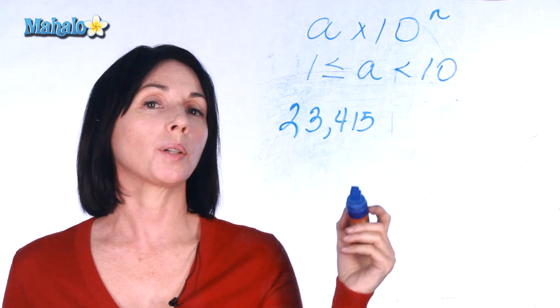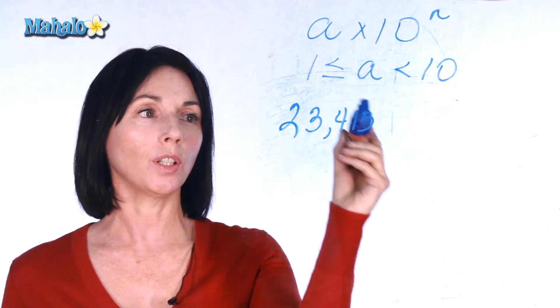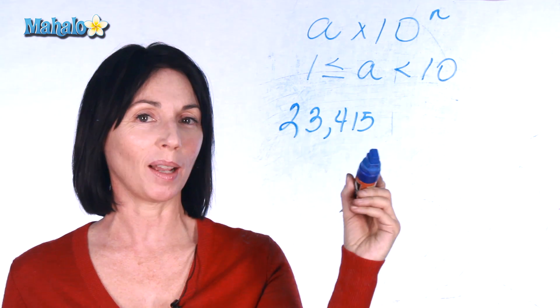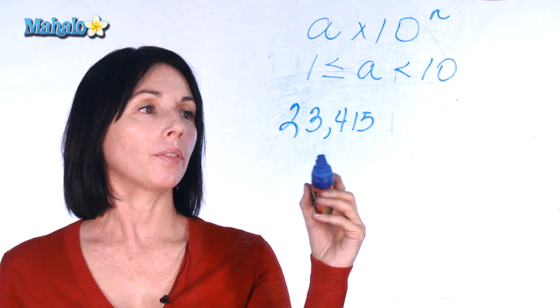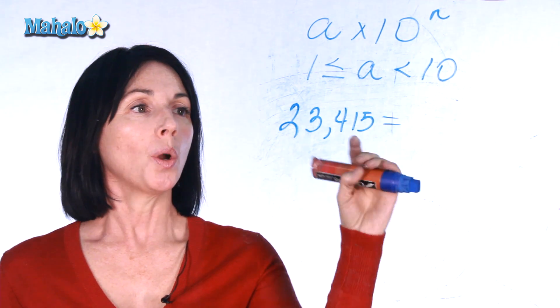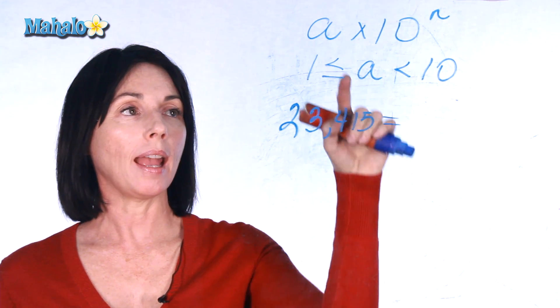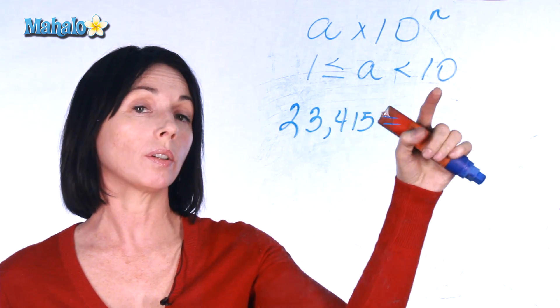Now, whenever I want to write in scientific notation, I have to locate where the decimal point is in my number and then move it over so many positions. So, what we're going to have here in scientific notation, we want this value, our a, to be greater than or equal to one or less than ten.